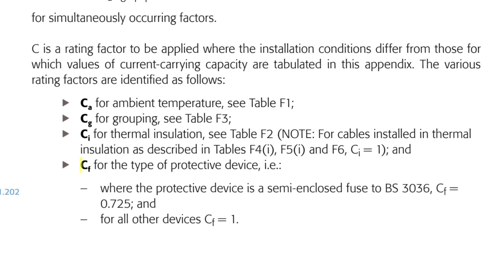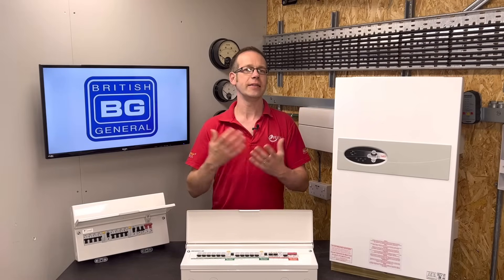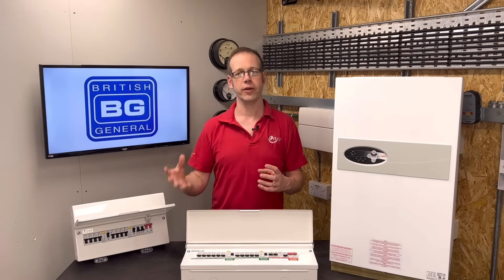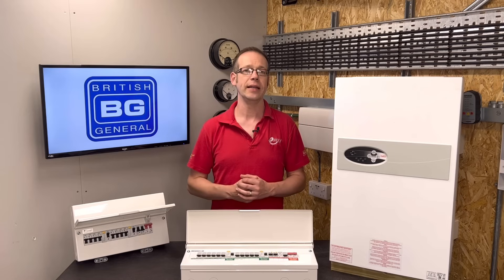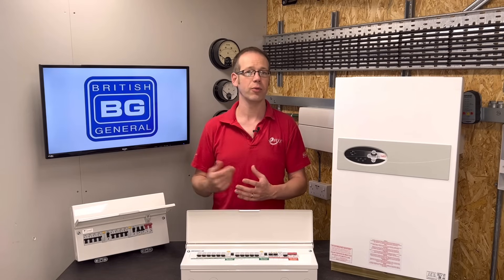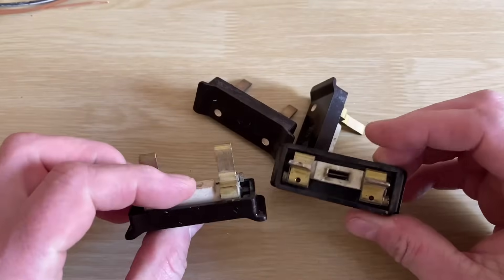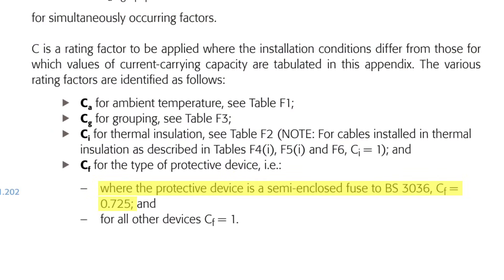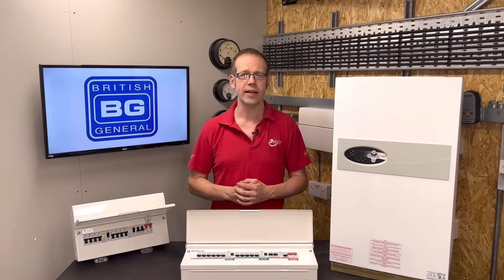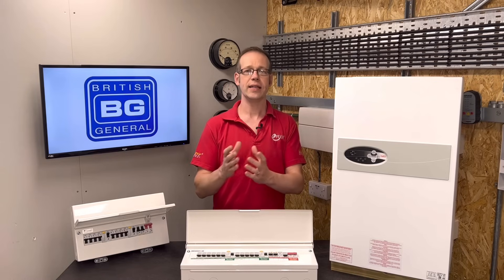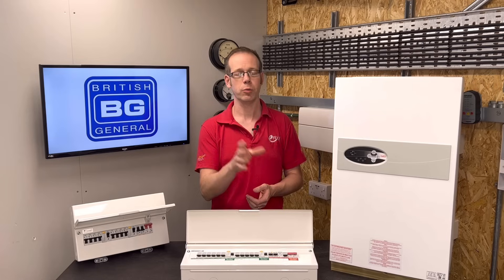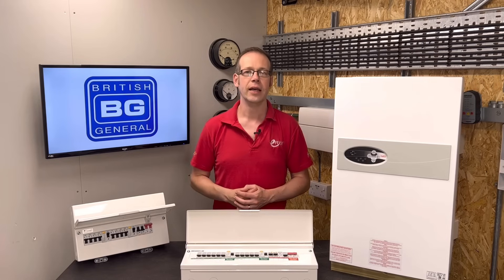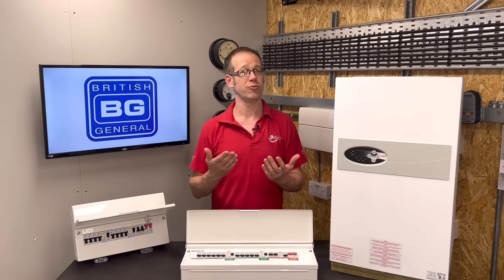Finally, CF relates to occasions when you may use a fuse to protect the circuit. A fuse is generally slower to operate when a fault occurs, meaning high current may flow in the conductor for longer, so the cable may need to be larger to dissipate the increased heat without damage. If you're using a BS3036 fuse — such as the old rewireable fuse with a replaceable wire — you may need to apply a rating factor of 0.725. For our example, we're going to use the values for CA and CG as discussed, but not apply CF as we wouldn't install a new circuit off a BS3036 fuse, and we'll avoid thermal insulation because it's really not good for cables.